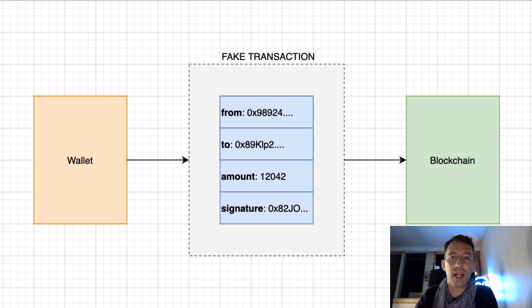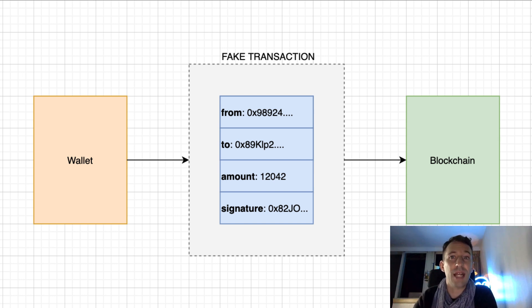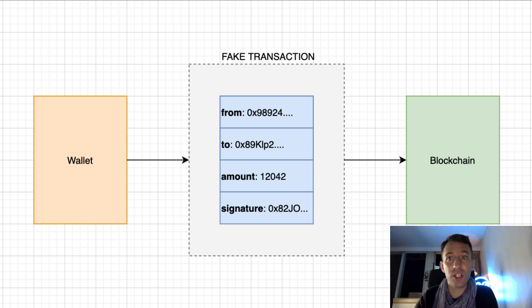Also, when you send a transaction to the Bitcoin network, you don't need to trust anybody in the communication chain. If anybody tries to modify the data of the transaction — like the recipient field — the signature will not match the new data, and the transaction will be rejected by the network. The worst that can happen is that someone in the communication chain decides to drop your transaction, in which case it's never mined and your transaction never happened. Now that you understand blockchain technology, it's time to see its main use cases.